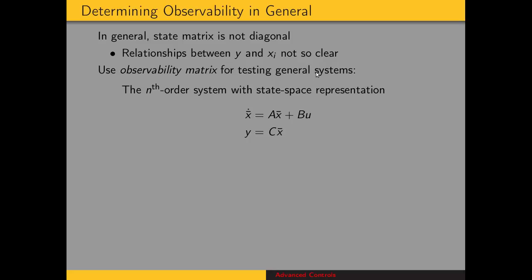Therefore, we're going to use the observability matrix for testing general systems. So we say that the nth order system with state-space representation, as shown here, is observable if the matrix O sub M, that's the observability matrix.